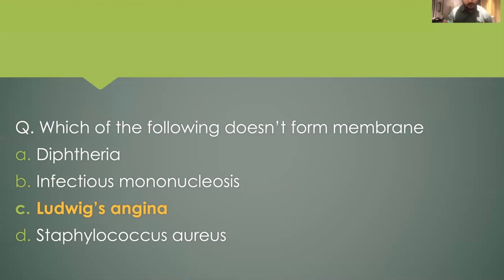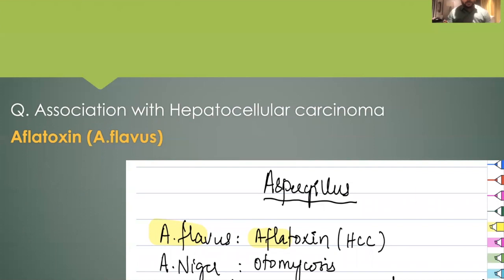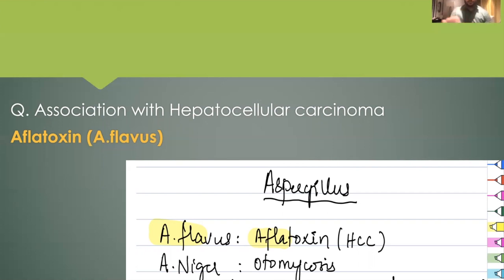The final part of that question was about association with hepatocellular carcinoma. Aflatoxin is produced by Aspergillus flavus, and this aflatoxin is related to hepatocellular carcinoma. I highlighted the first four letters of the organism — A-F-L-A-V-U-S — giving you the word 'afla' to remember aflatoxin.